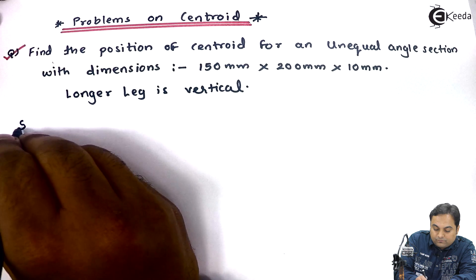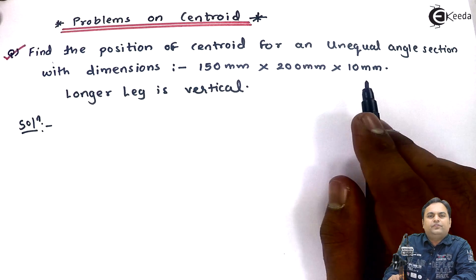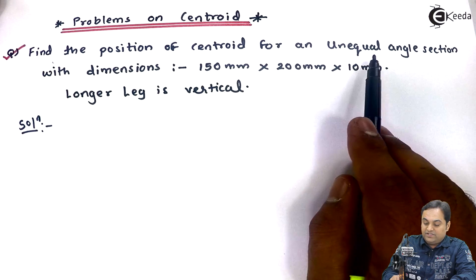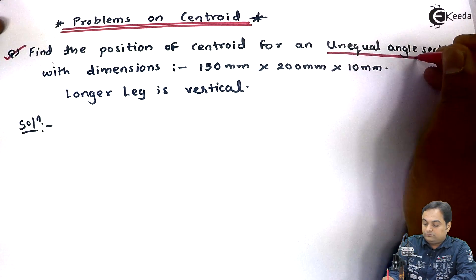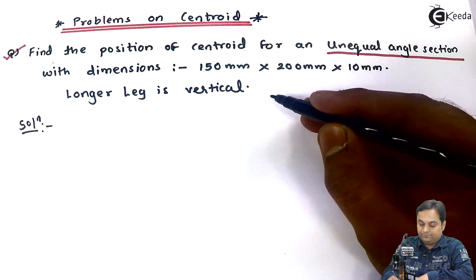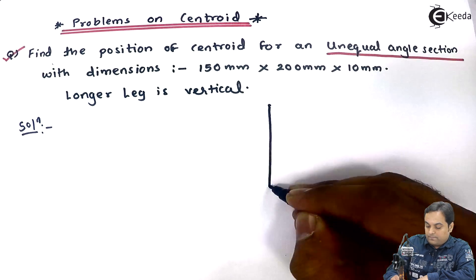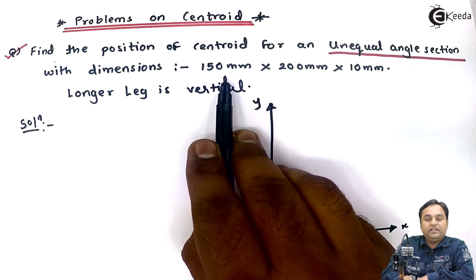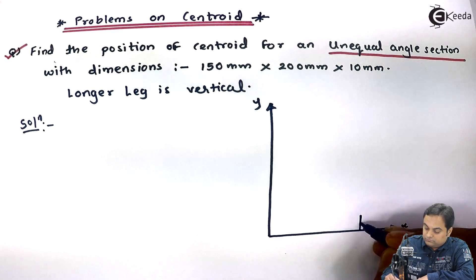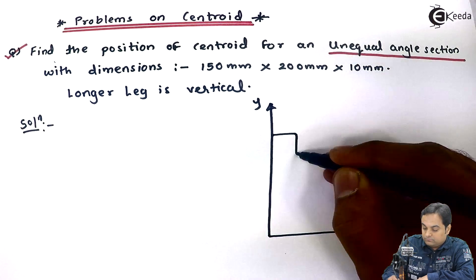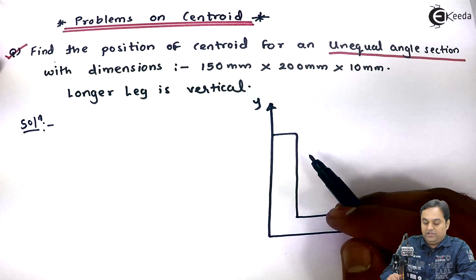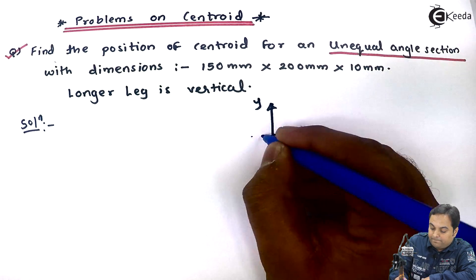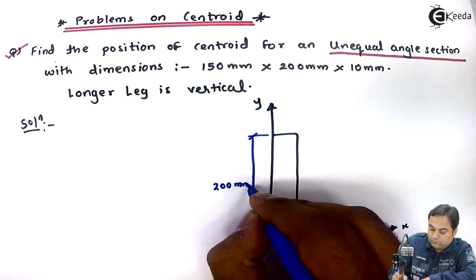The solution part. We have to find the position of centroid. By position of centroid, we mean that we have to calculate x̄ and ȳ values. The angle section given is an unequal angle section. The dimensions are given, so I'll draw the unequal angle section first. Dimensions are 150 × 200 × 10: 150 mm is the width, 200 mm is the height, and 10 mm is the thickness.